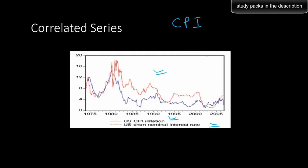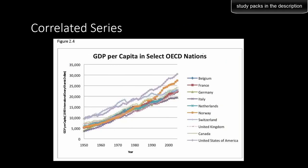That's where Granger causality comes into picture. In such scenarios, to understand the relationship between these two time series, we need to understand what Granger causality is. For example, we have the GDP per capita for OECD nations, which are very correlated and upward trending. If we were to predict GDP for a given OECD nation, we can make use of GDP growth for other OECD nations to improve the forecast.